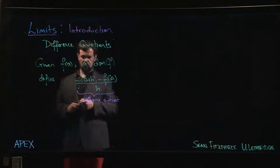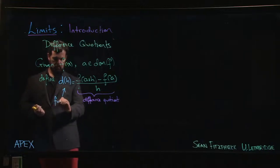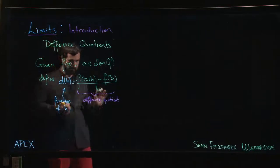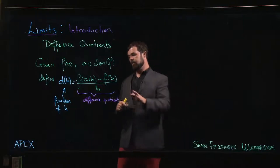We could maybe call it D for difference, right? So D is a function of H. This is important to realize—that the variable dependence in this thing is actually on this H. A is not a variable here. A is some fixed number. H is where we get our variability.